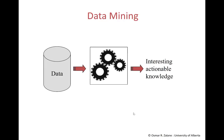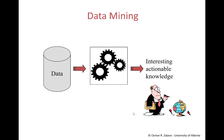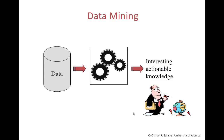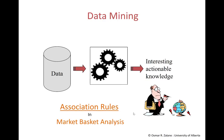Let me first introduce data mining. Data mining is a field in computing science that consists of discovering and extracting patterns from large collections of data. These patterns are interesting, actionable knowledge that decision makers in companies, governments, etc., use as insights to make better informed strategic decisions. One such pattern is what we call association rules, and I will illustrate this in the context of market basket analysis.